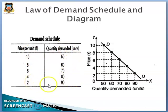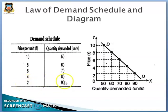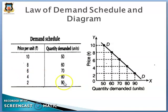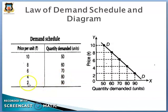On the other hand, when price increases, quantity demanded decreases. When the price is 2 rupees per unit, the quantity demanded is 90 units. As the price increases from 2 rupees to 4 rupees, quantity demanded decreases from 90 units to 80 units.